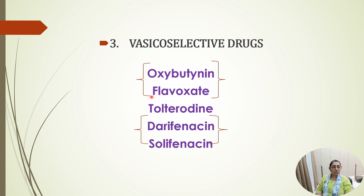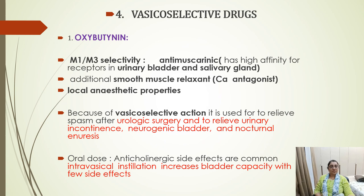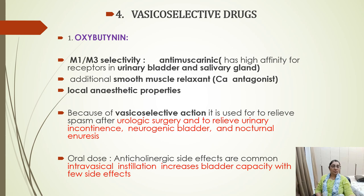Vesico-selective drugs specific to the bladder include oxybutynin, flavoxate, tolterodine, darifenacin, and solifenacin. Oxybutynin is an M1 and M3 receptor selective antagonist specific for the urinary bladder and salivary gland, with additional smooth muscle relaxation and local anesthetic properties. It is used to relieve spasm after urological surgery, urinary incontinence, neurogenic bladder, and nocturnal enuresis.